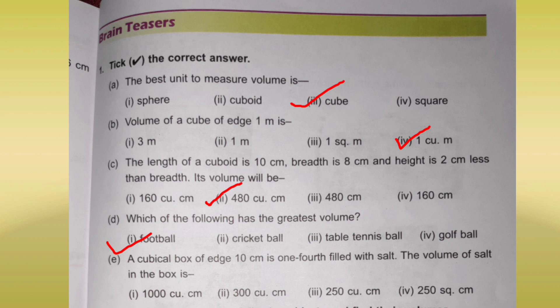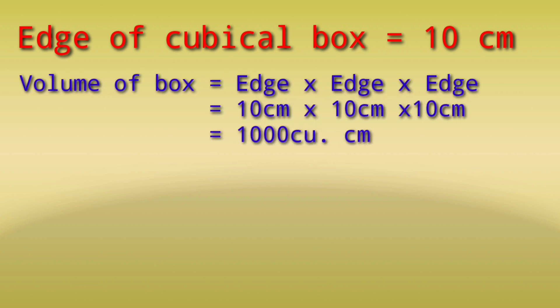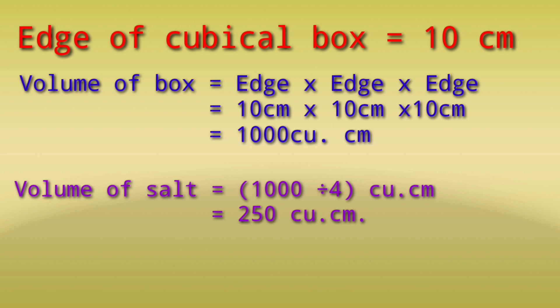Next: a cubical box of edge 10 cm is one-fourth filled with salt. First, the volume of the box is edge x edge x edge = 10 x 10 x 10 = 1000 cubic centimeters. The volume of salt is one-fourth of 1000, so 1000 divided by 4 = 250 cubic centimeters.